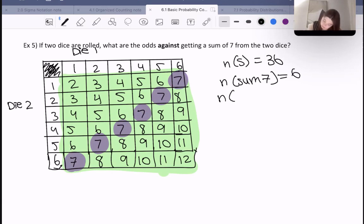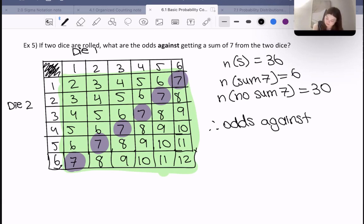So there's six possibilities of a seven. Therefore, the number of things where we do not have a sum of 7 would be the other 30. If we have 6 things that are a sum of 7 and 36 things total, then 30 would not have that sum. Therefore, the odds against a 7 would be 30 over 6 or 5 over 1, or 5 to 1. Those would be the odds that we do not get a seven.